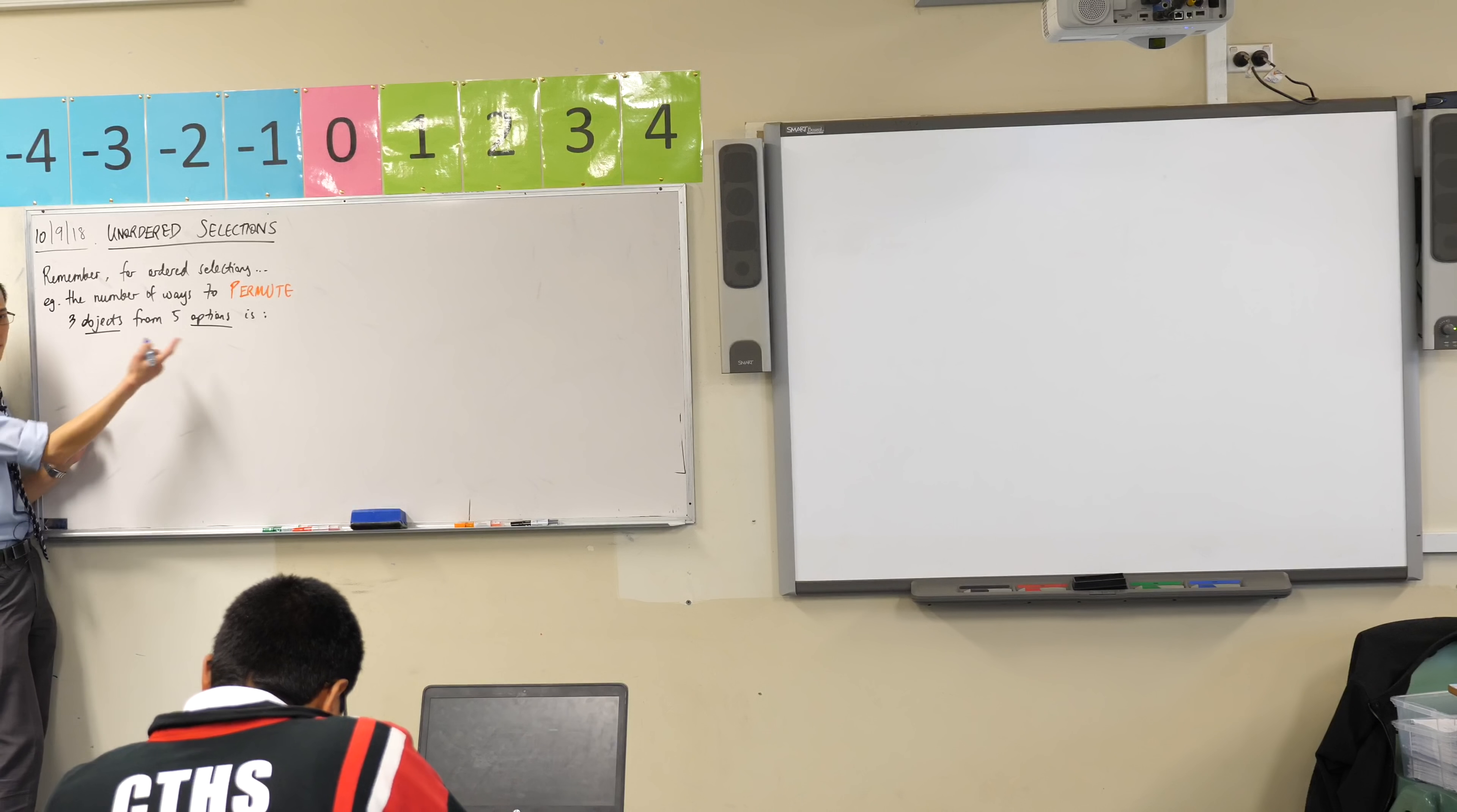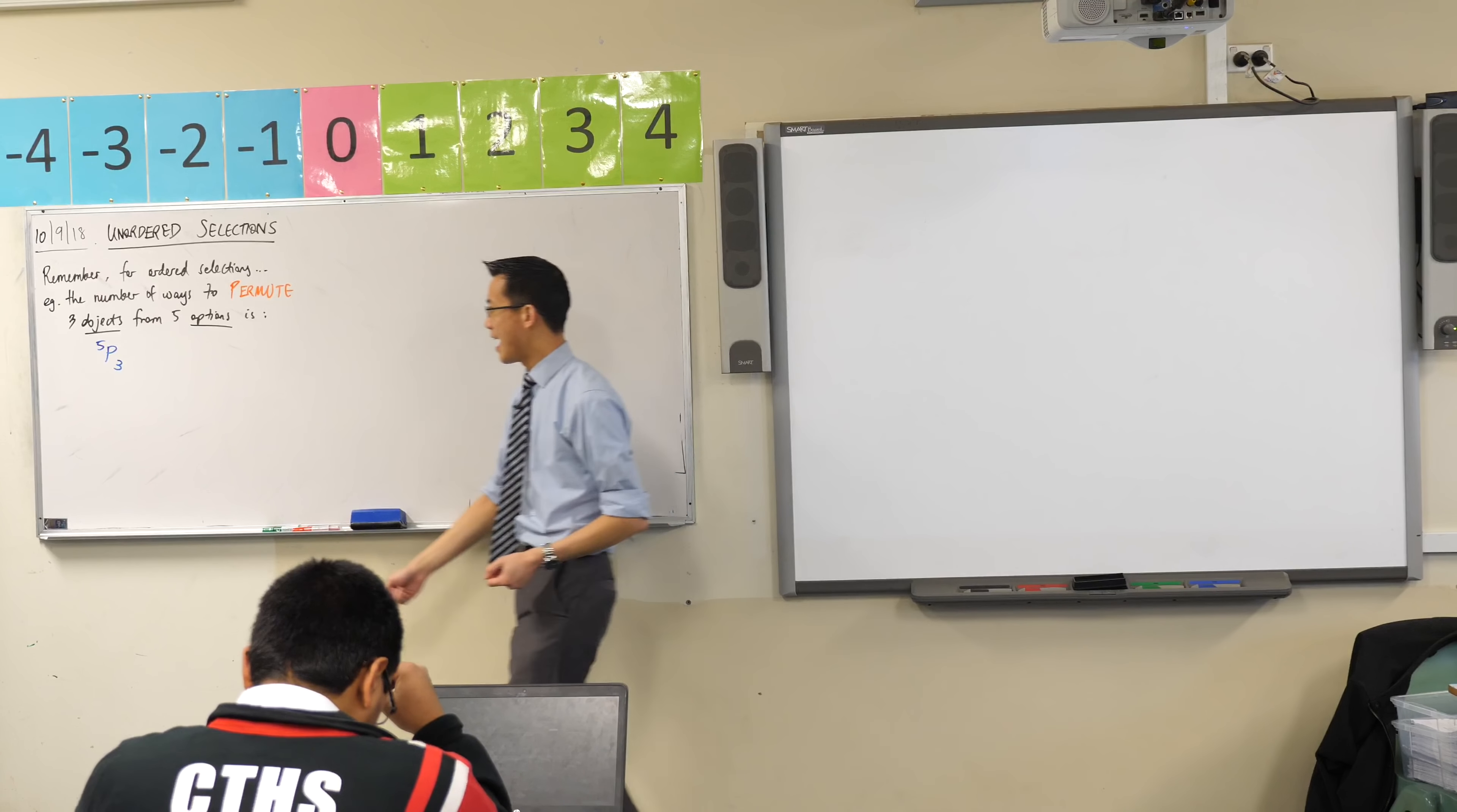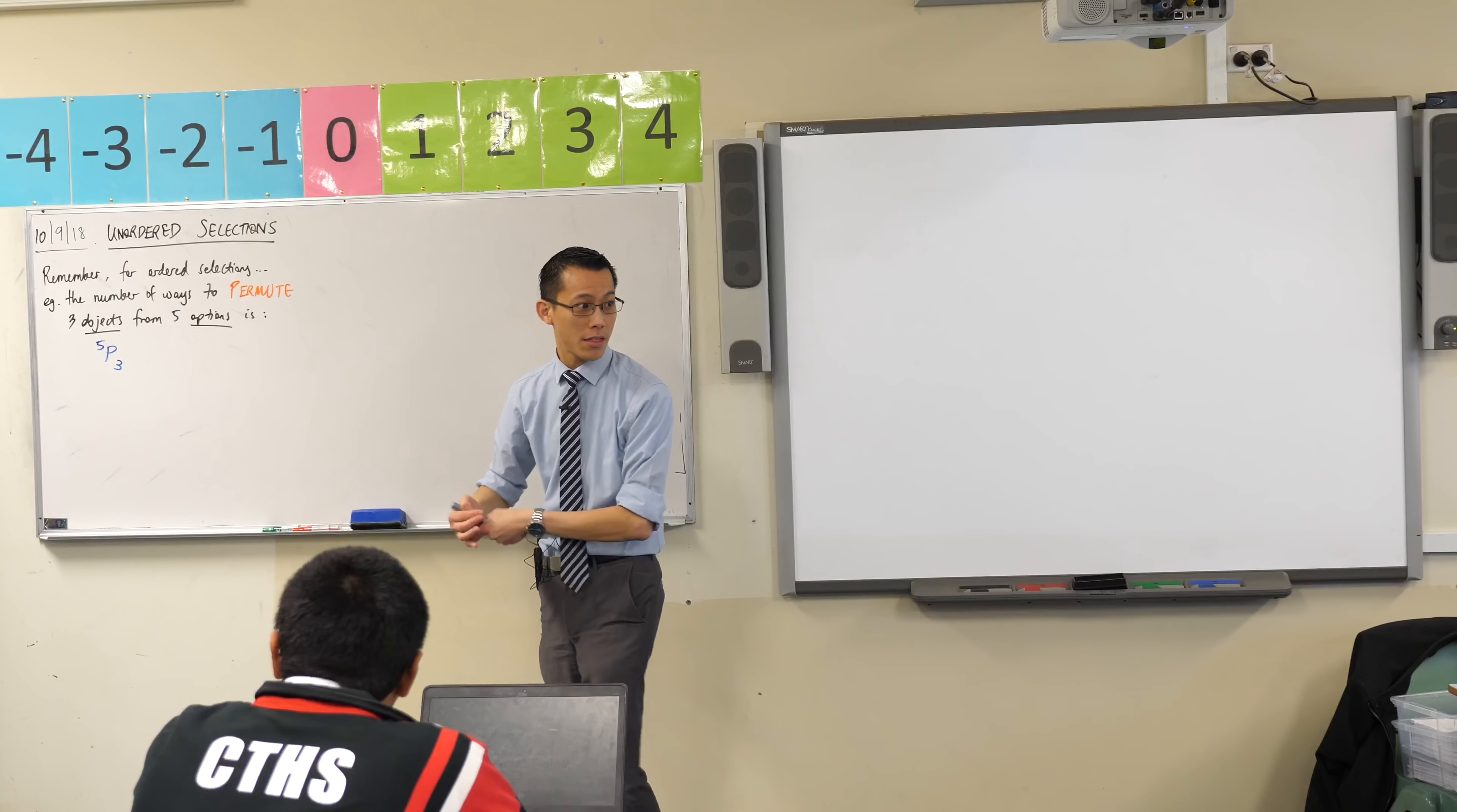And what would we punch into our calculator for this question? Yeah, very good. 5P3, right? You've got five things to choose from. You want to choose three of them and we use this P for permute or for pick. That's actually sometimes how people read it, 5P3 or whatever. And in fact I want you to go to your calculator now. Could you tell me what 5P3 is equal to?